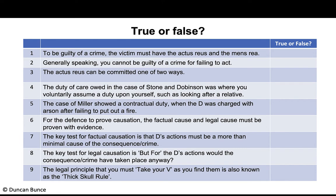True or false, recapping what we did before. Number one: to be guilty of a crime, the victim must have the actus reus and the mens rea. The answer is false — it's not the victim but the defendant who must have the actus reus and the mens rea.